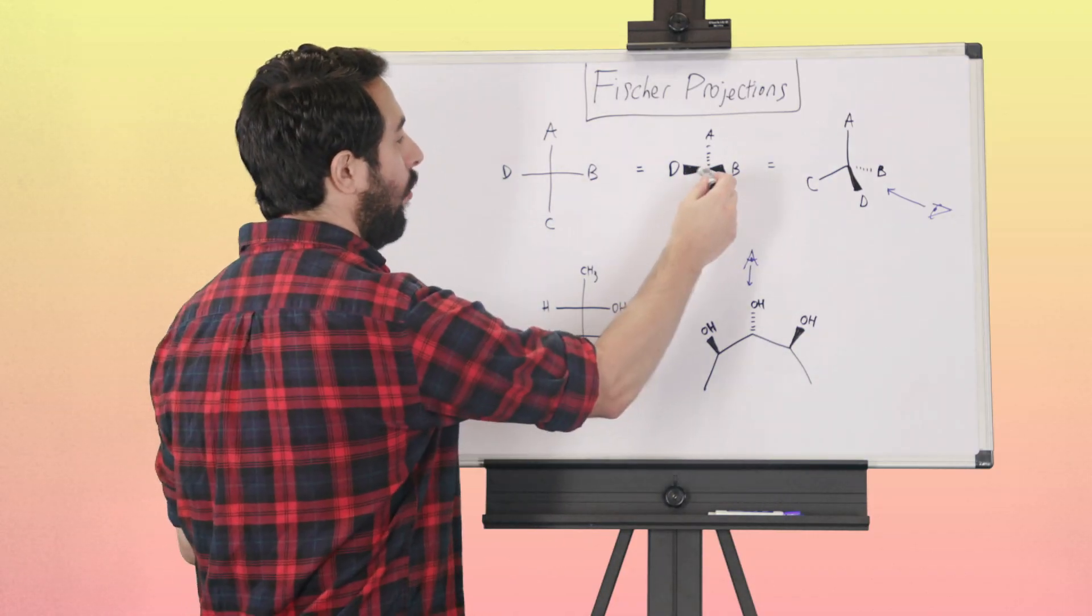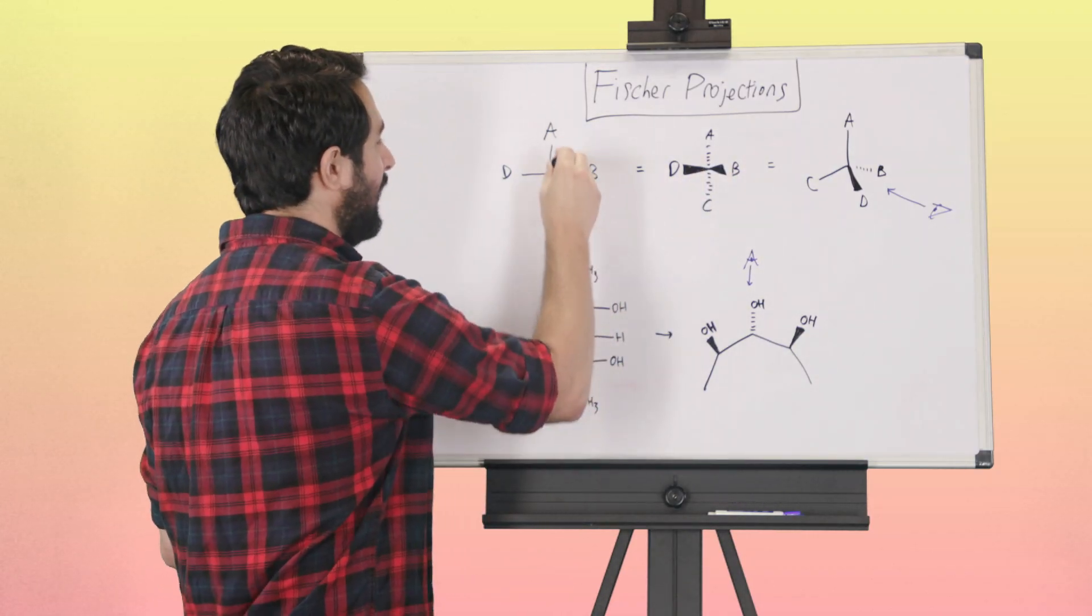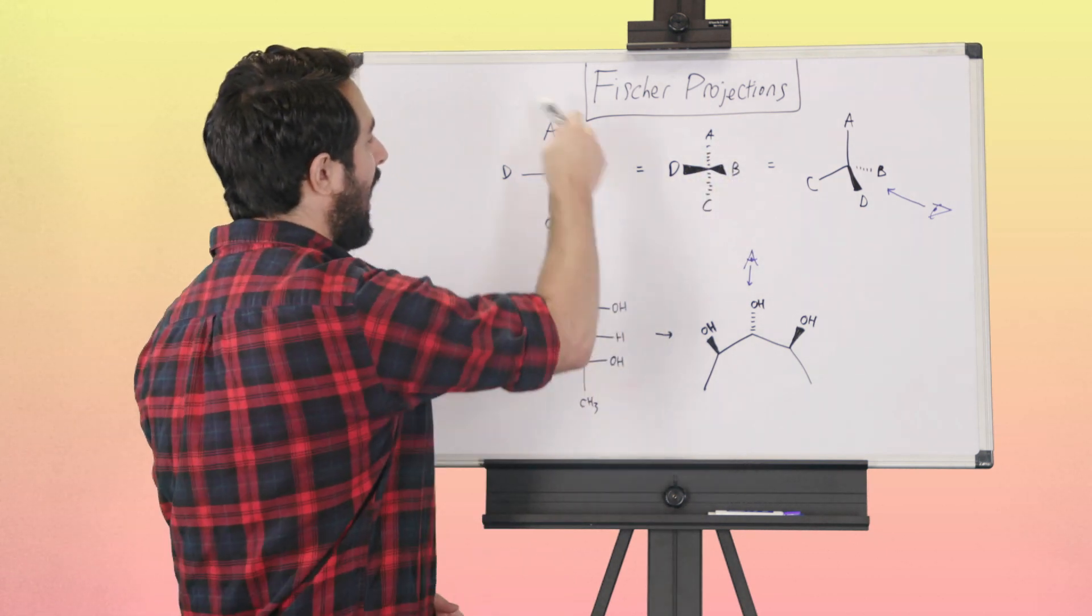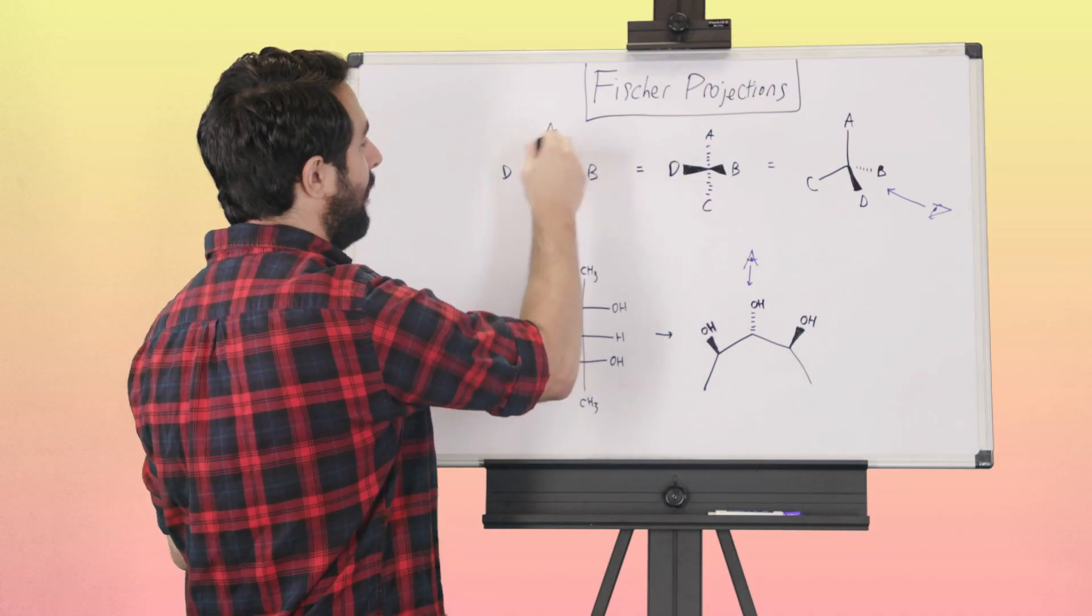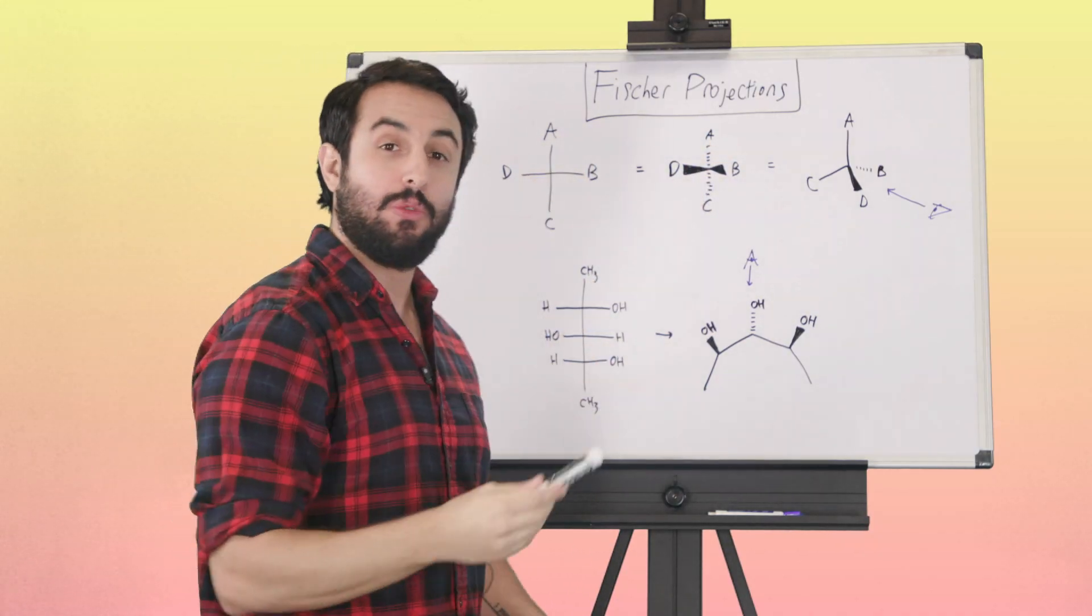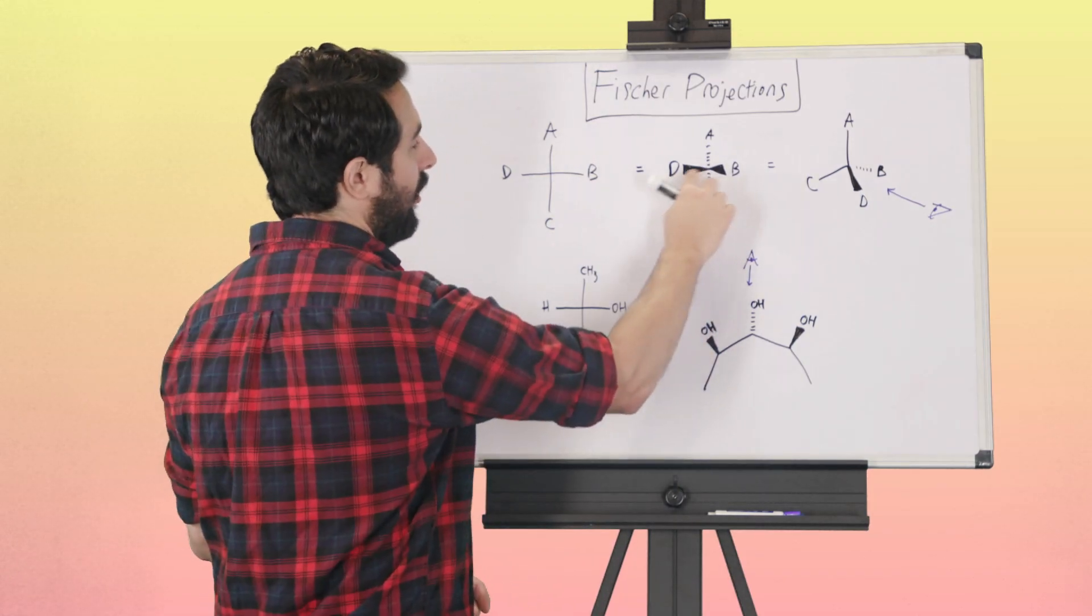And any vertical bonds are implied to be dash bonds. So the geometry of this implies this. You can see a little bow tie there—there's a little bow tie on every carbon, essentially, as one way to remember that.